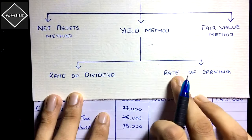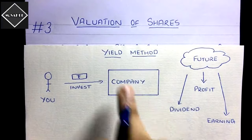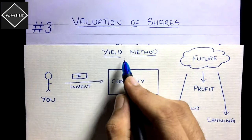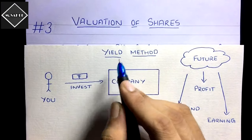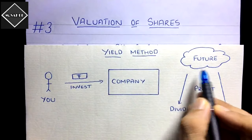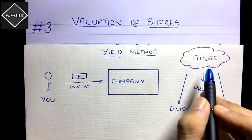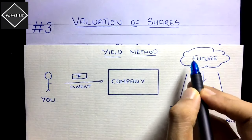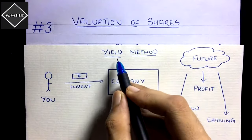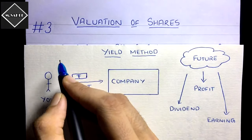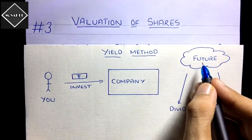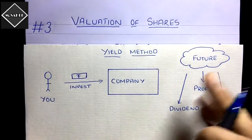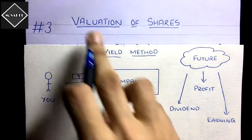Let's understand how the yield value method works. First, we need to know the meaning of yield — yield means future result. For example, if you sow crops now, what harvest will you get in future? Similarly, if you study now and put your hours into studying, how many marks will you get in future? That is the basic concept of yield.